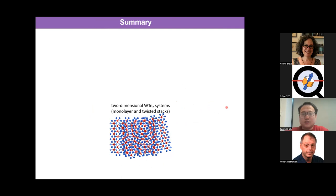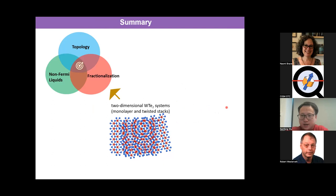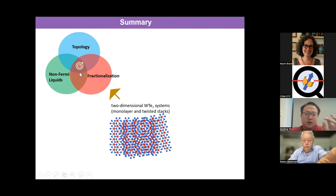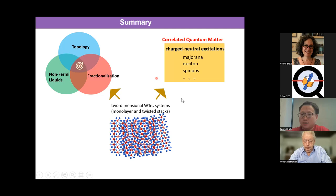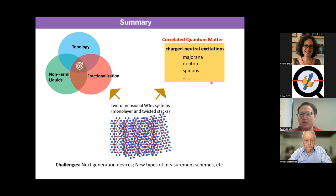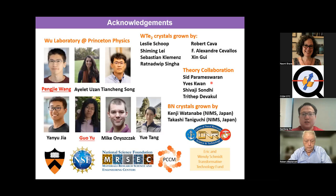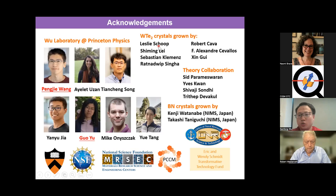In summary, I want to mention that this two-dimensional WTe₂ system — both monolayer and twisted bilayer — is very interesting. I identify this as a very unique spot where topology, fractionalization, and non-Fermi liquid physics co-exist in this material platform. We can use this platform to engineer and discover new correlated phenomena and excitations. The challenge is what are the next generation devices in a new type of environment. I'd like to thank: this work was done by my postdoc Peng Jie Wong and student Guo Yu, who did all the hard work and led the projects, in collaboration with Leslie Shreve and Pablo Jarillo-Herrero's group who provided very high quality crystals, and theory collaborators from Sid and Shivaji Sondhi.